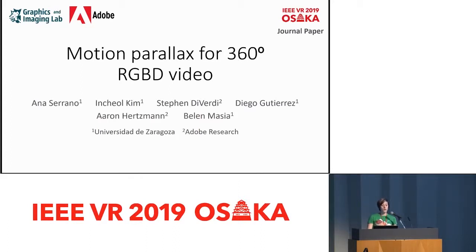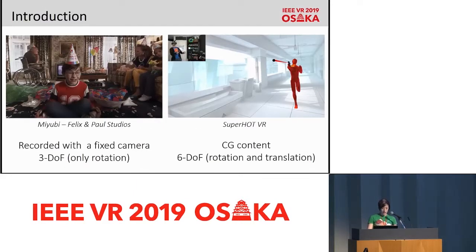I'm going to talk about the work on motion parallax for 360 degrees RGBD video. Reproducing real-world recorded content in VR is a very challenging task, and I would like to start explaining why with these two videos.